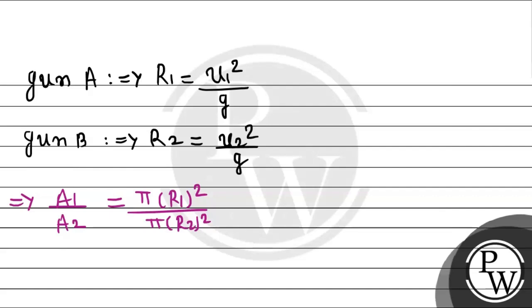Now R1 squared and R2 squared, we can substitute. This will be u1 squared by g whole squared divided by u2 squared by g whole squared.